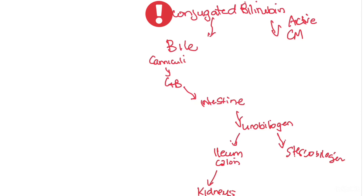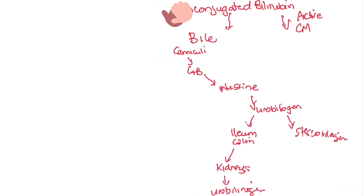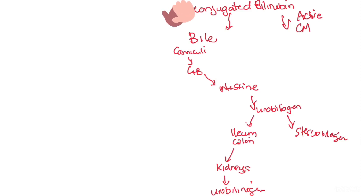In today's video we looked at the destruction of red blood cells in the reticuloendothelial system, the formation of insoluble unconjugated bilirubin — which may be increased in sickle cell anemia and other conditions causing hemolysis — and the formation of conjugated bilirubin in the liver. From conjugated bilirubin we covered the formation of stercobilinogen, which pigments feces, and urobilinogen, which colors urine.